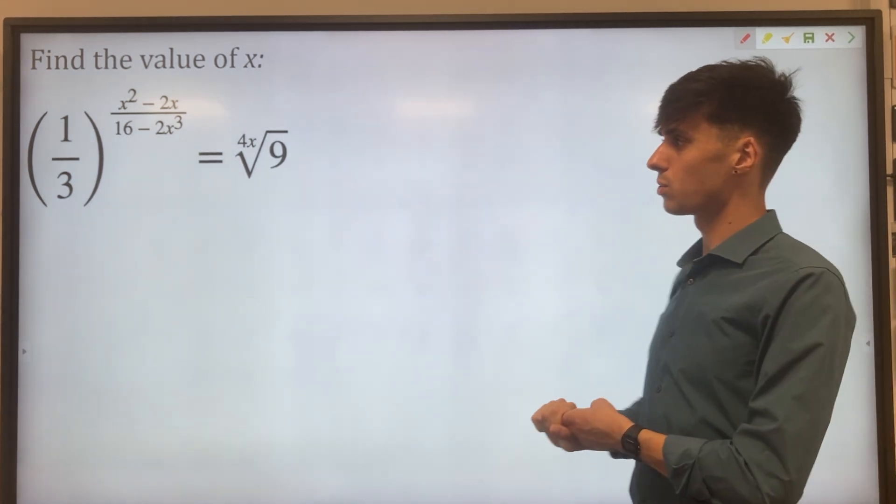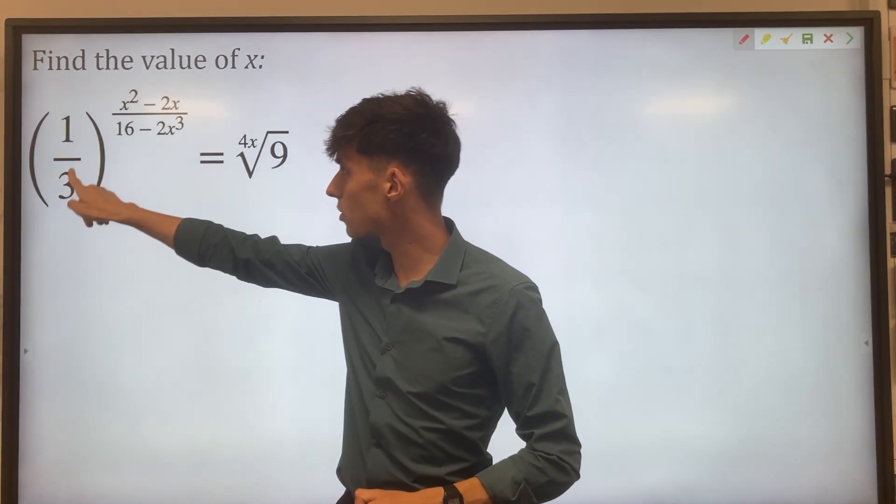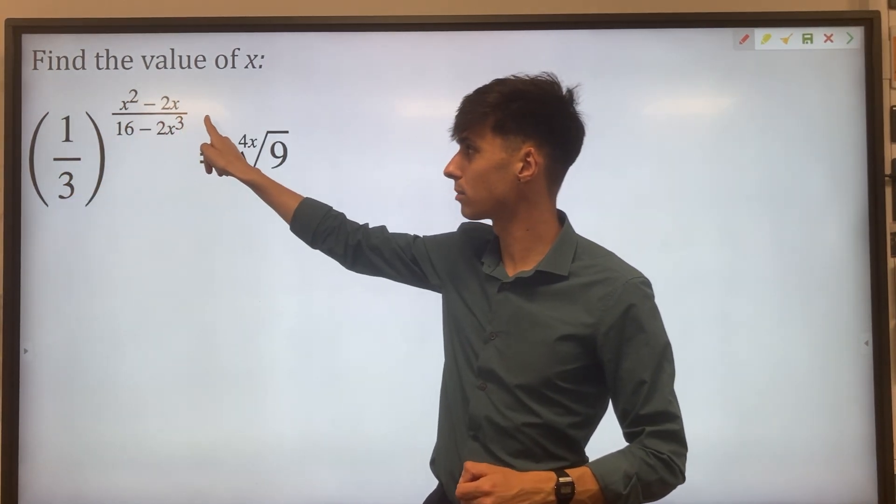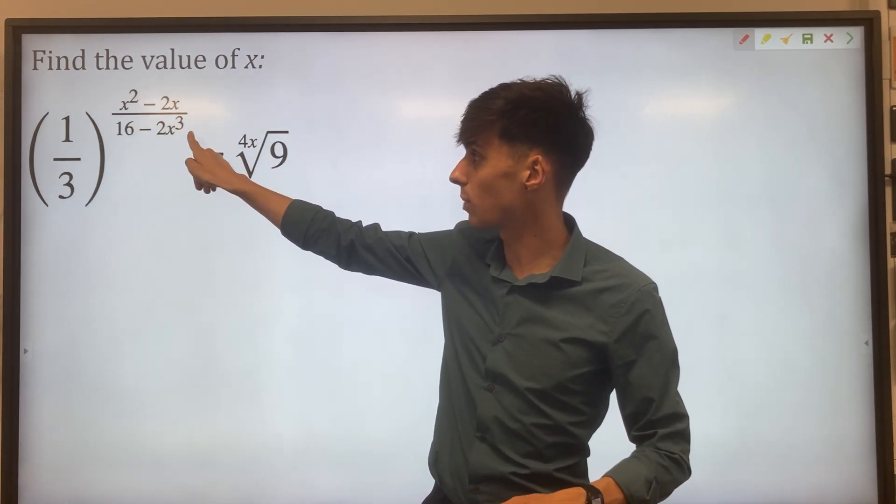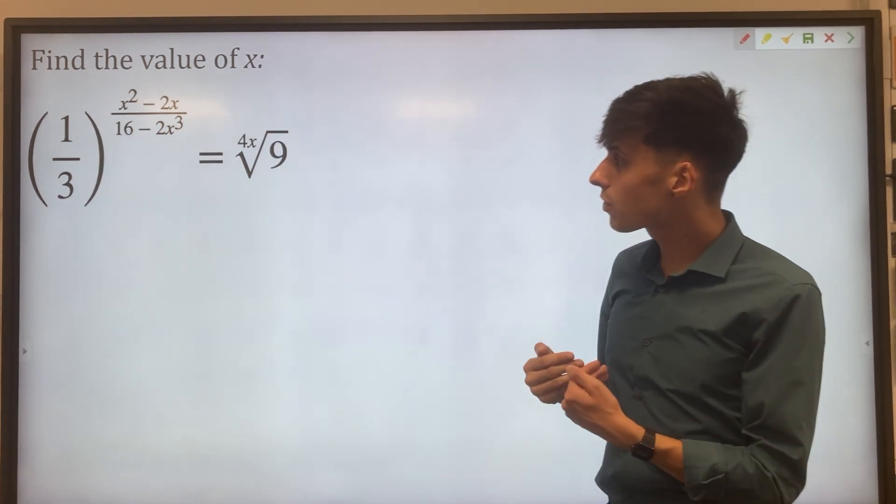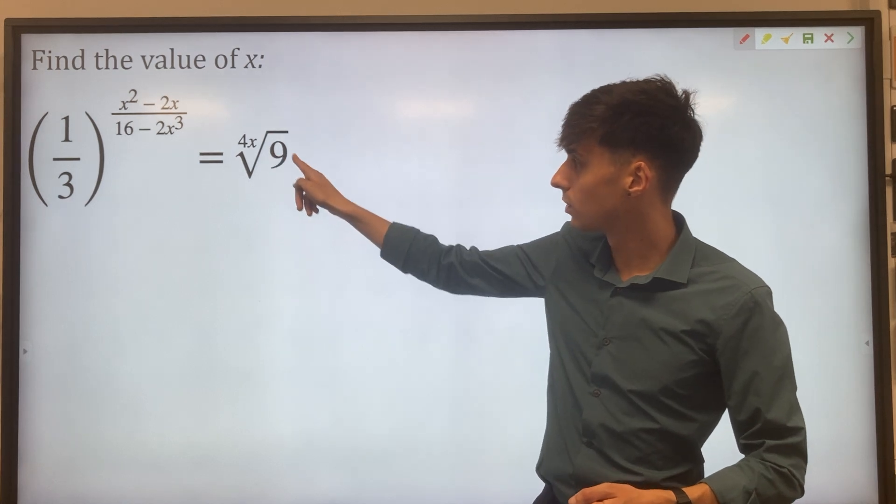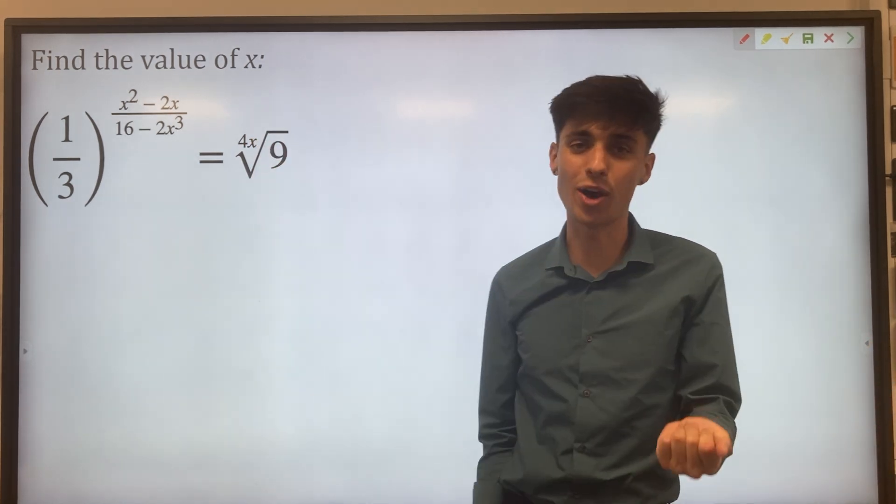So our first thing to note is that we have one third to this algebraic power, so it's x squared minus 2x over 16 minus 2x cubed, and on the other side we have 9 but it's the 4x root of 9.